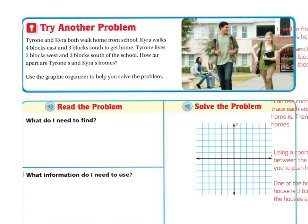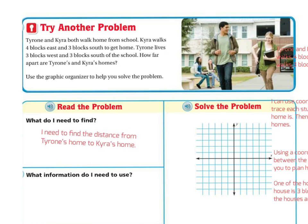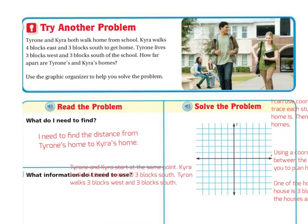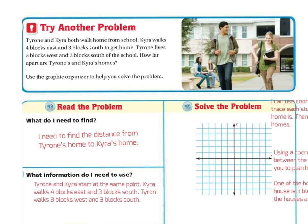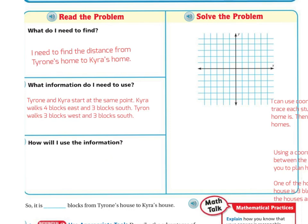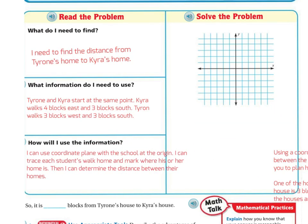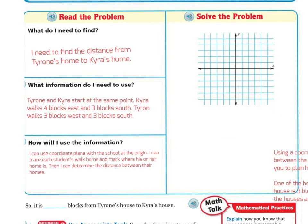Let's read the problem. What do I need to find? I need to find the distance from Tyrone's home to Kyra's home. What information can I use? Tyrone and Kyra start at the same point. Kyra walks four blocks east and three blocks south; Tyrone walks three blocks west and three blocks south. How will I use the information? I can use the coordinate plane with the school at the origin, trace each student's walk home, mark where each home is, and then determine the distance between their homes.